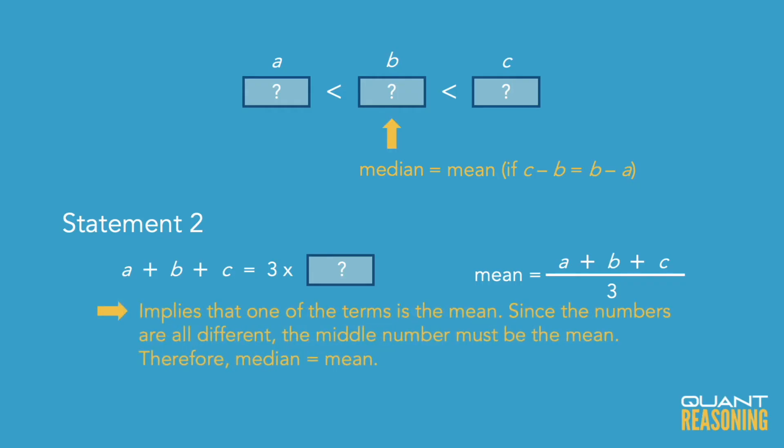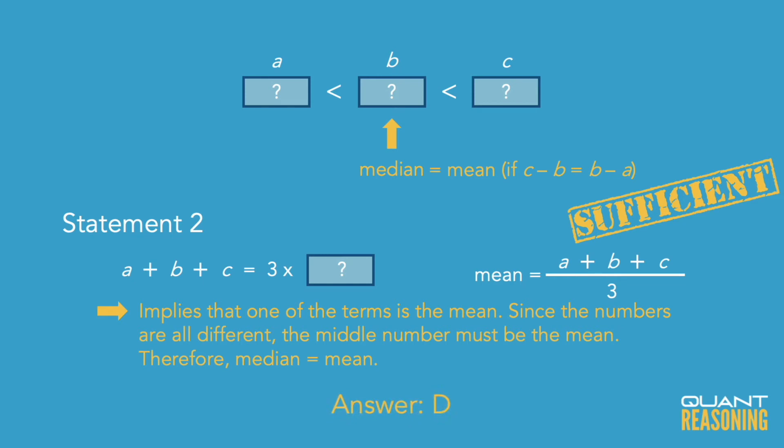Statement two doesn't tell us which of the terms is the mean — it just says one of the terms is the mean of the set. But we also know the three numbers are different. Could it be the biggest of the three numbers? Could it be the smallest? No, because the deviations above and below the mean have to cancel out. So the only way this works is if the middle of the three numbers is the mean. But the middle of the three numbers is also the median. So this statement on its own also implies that the median equals the mean — in other words, it's an arithmetic sequence or an evenly spaced set.